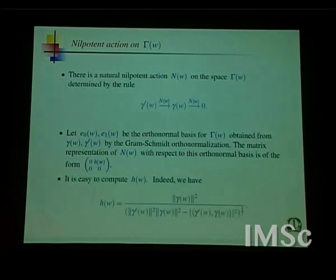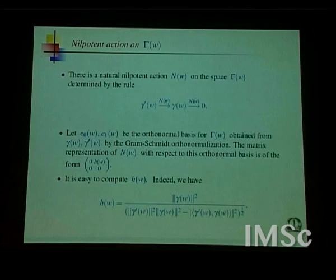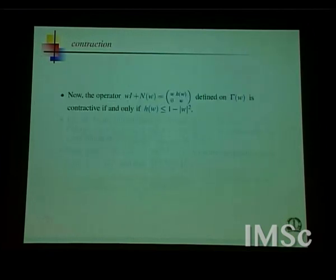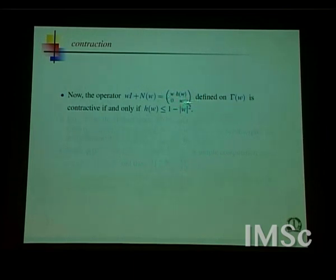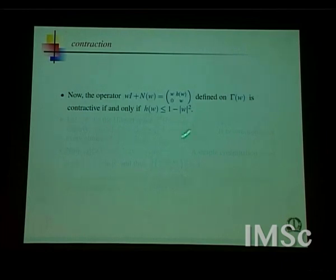You compute this h(ω), which is an easy computation, and get a certain expression. As it turns out, it is trivial to observe that the operator ωI + N(ω) — this two-dimensional linear transformation — is a contraction if and only if h(ω) ≤ 1 − |ω|². The fact that this bound is 1 − |ω|² is an object which is intrinsic somehow.